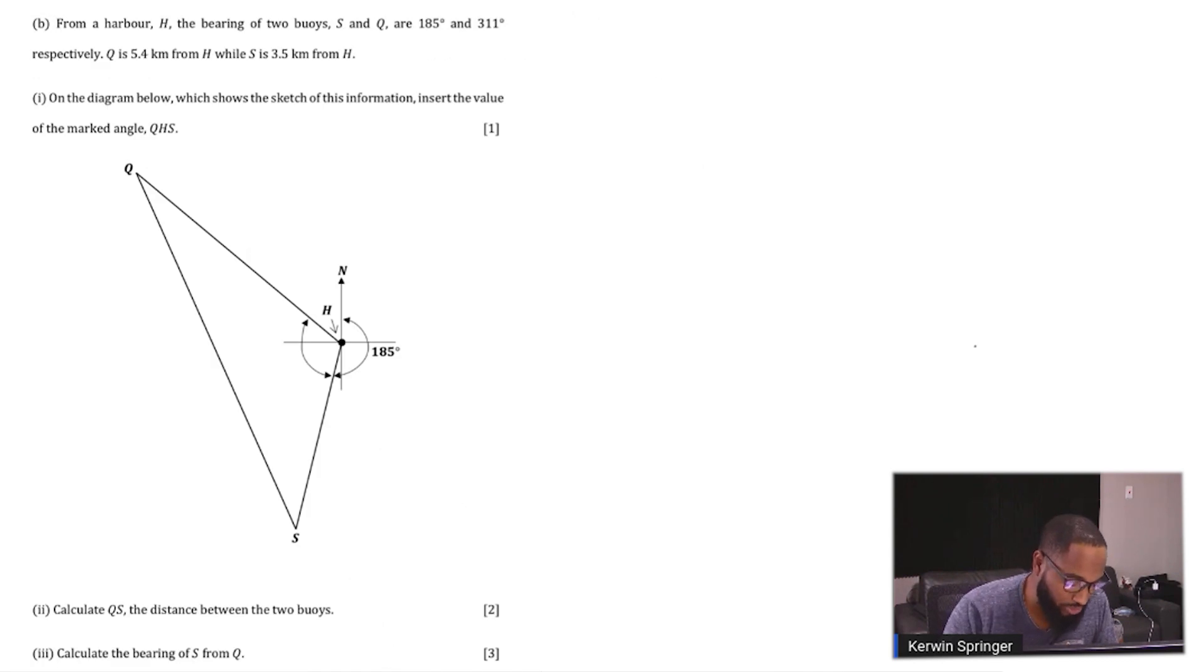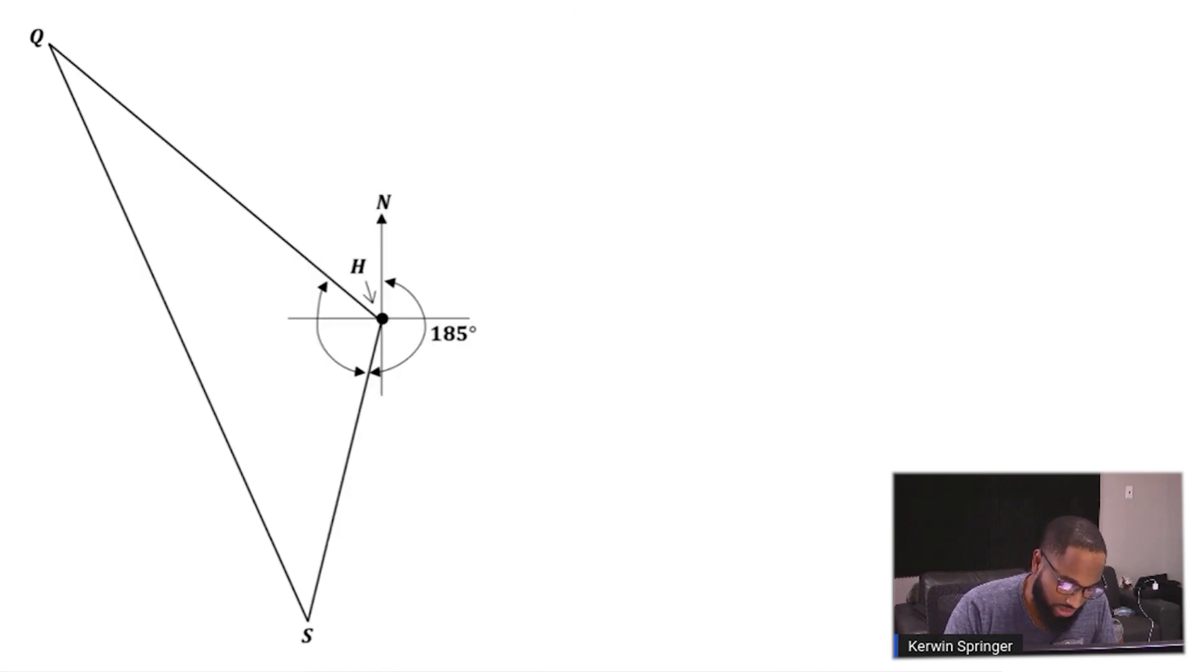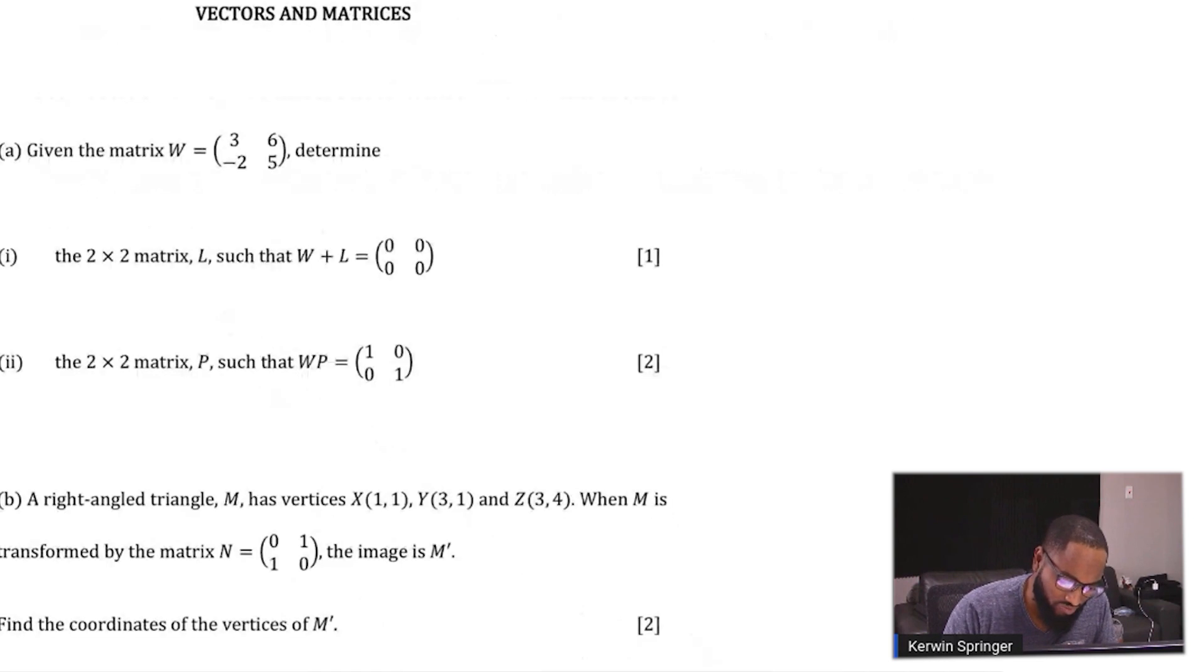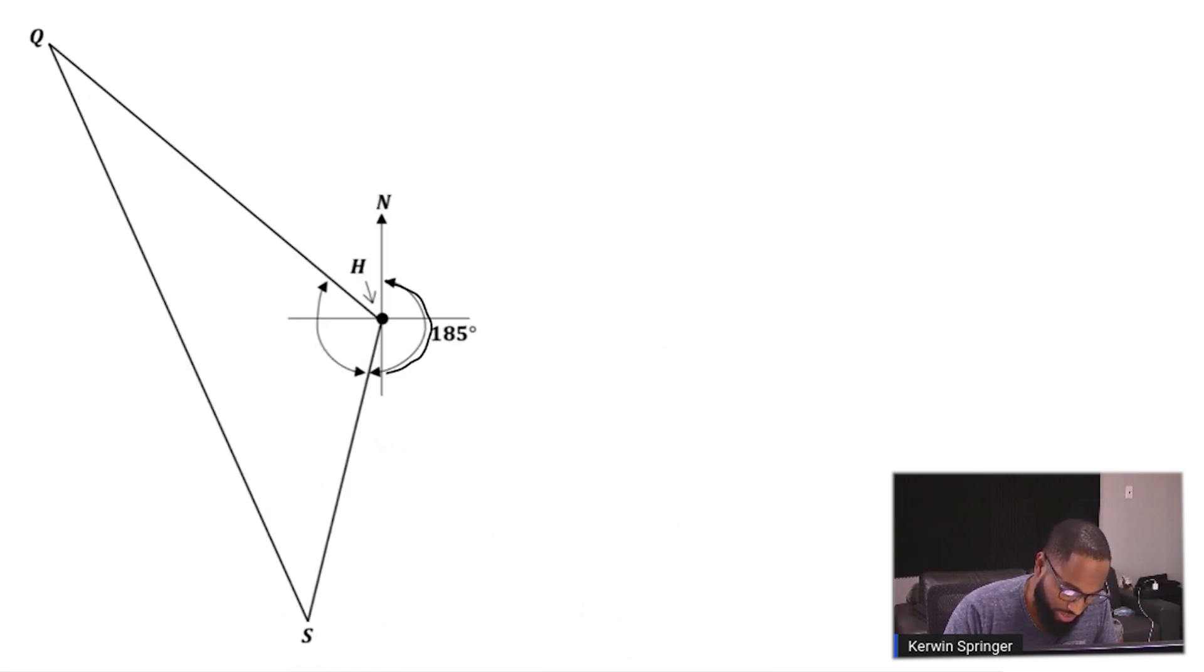So how do we do this? We were told that this was 185 degrees, and this is the bearing of S from H. The bearing of S from H means start at H, and the bearing of Q from the same H was 311 degrees. So I already know how to look at this. This bearing here is 185, and the bearing all the way here is 311 degrees.